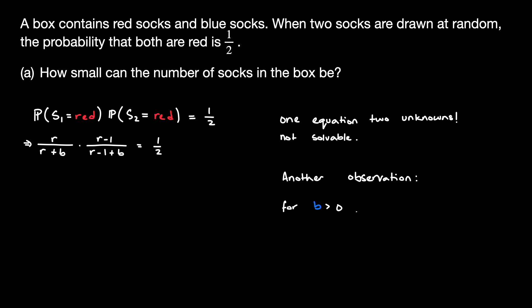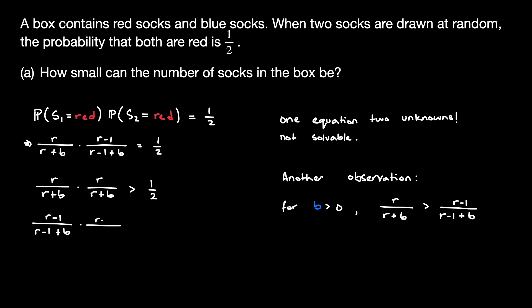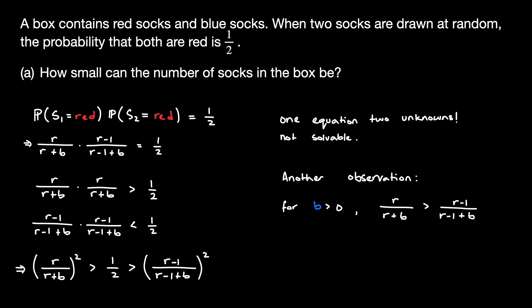We realize that for any number of blue socks greater than 0, the fraction r divided by r plus b — the first draw's probability of being red — must always be greater than the second draw's probability of being red. Using this observation, we substitute the first draw for the second draw and vice versa to get a pair of inequalities, which we then combine into the following expression. This expression gives us the relationship between the two variables.